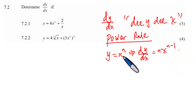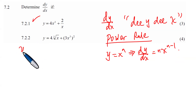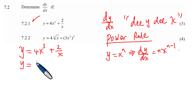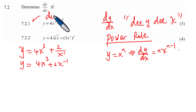The power rule states: if y = xⁿ, then dy/dx = nxⁿ⁻¹. In words: if y is x to the power n, we bring down n and subtract 1 from the power. For question 7.2.1, we have y = (4x³ + 2) / x. We must write everything in power form to use the power rule. The 2/x becomes 2x⁻¹ by bringing x from the denominator to the top with a negative index.